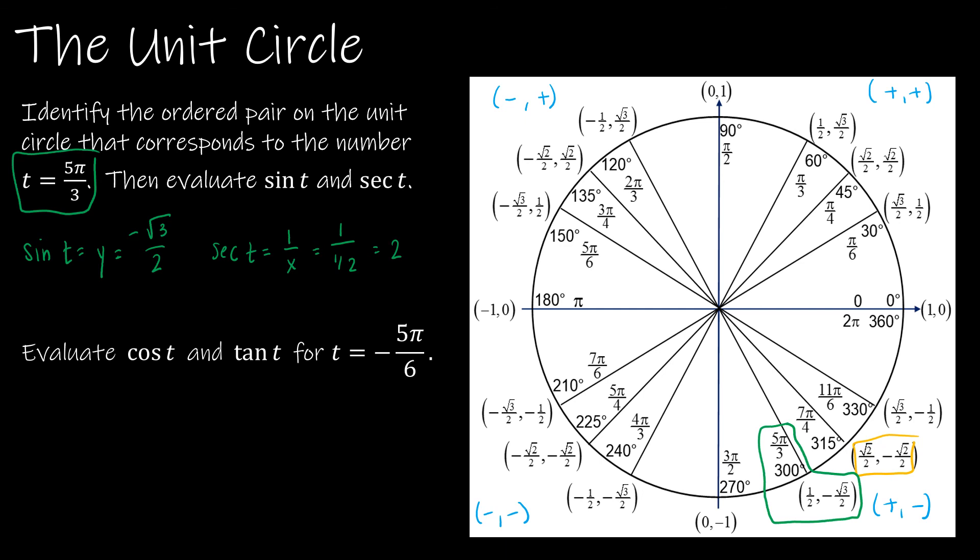Let's do the same for cosine and tangent for -5π over 6. So we haven't looked at those negative angles much. But keep in mind, if 5π over 6 is here, then -5π over 6 would go in the opposite direction. So -5π over 6 is the same as 7π over 6.